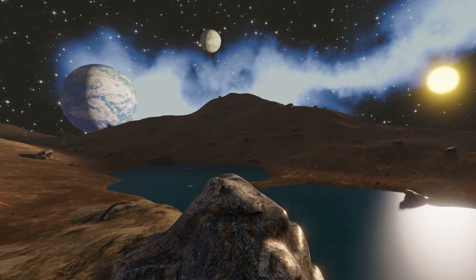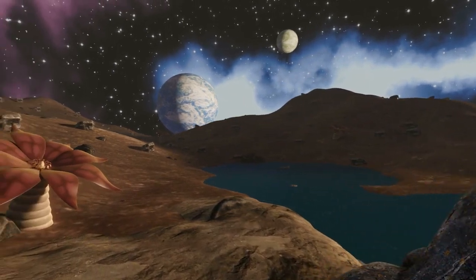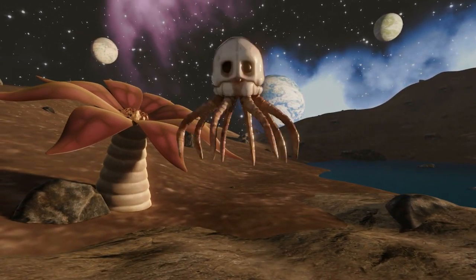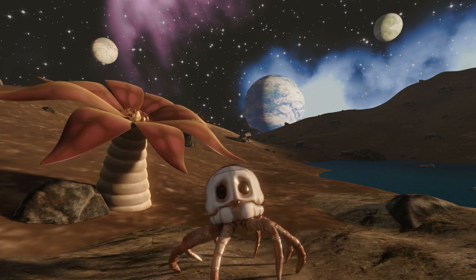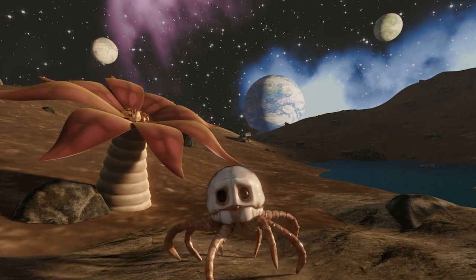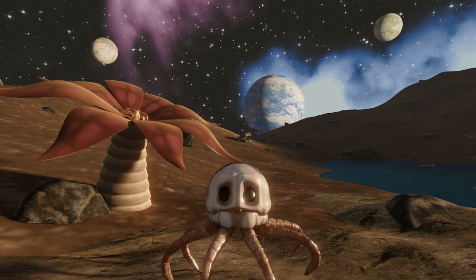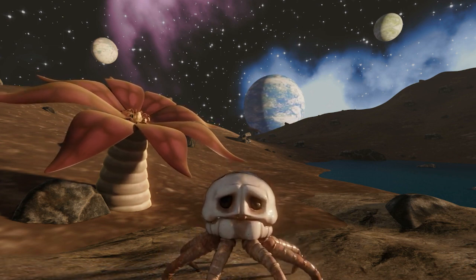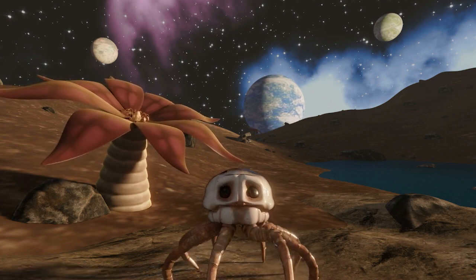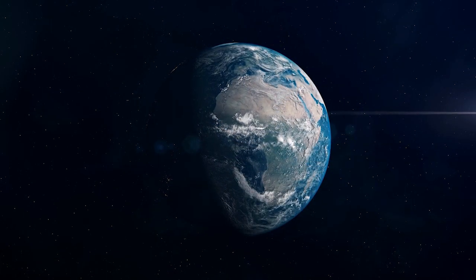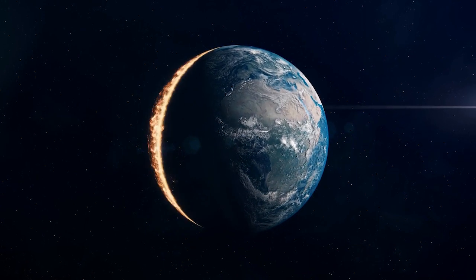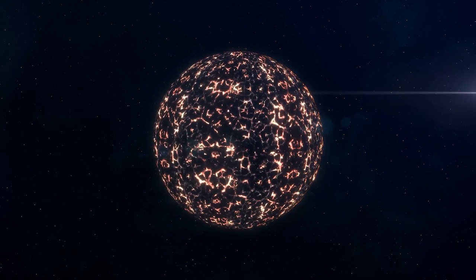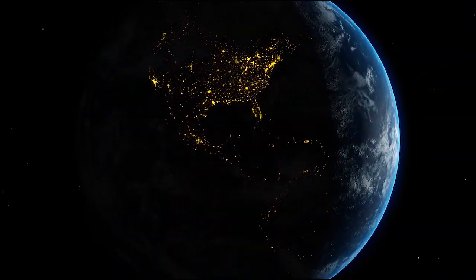One example is the TRAPPIST-1 planetary system, located around 40 light-years away from Earth, which will be the subject of the James Webb Space Telescope's first mission. The system revolves around a calm red dwarf star with seven Earth-sized rocky planets, three of which are located in the so-called habitable zone and might have liquid water on their surfaces. Despite the TRAPPIST-1 star being much smaller and colder than the Sun, it radiates light that is similar to that of Earth due to the close orbit of its planets.